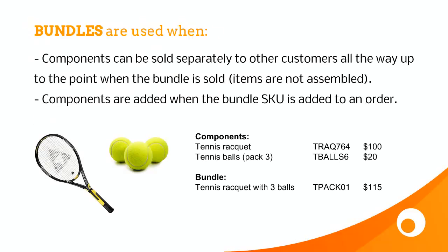Bundles are used in the scenario where all the components of that bundle can still be sold separately to other customers, all the way up to the point when the bundle is sold. Components are not assembled. So for a bike wheel, where you'd build up a wheel from rim, spokes and hub, the components are not available separately once they've been built. So that's an assembly, not a bundle.